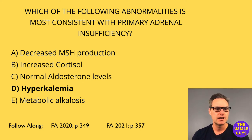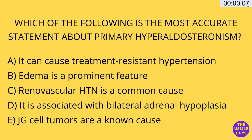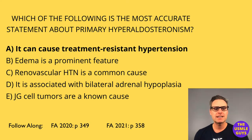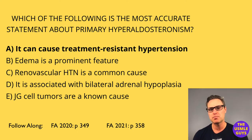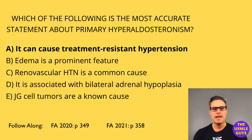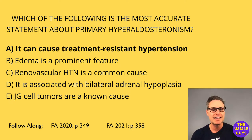All right, let's move on to our next question. The correct answer here is A. Let's talk about hyperaldosteronism, which occurs when the adrenals secrete too much aldosterone. Primary hyperaldosteronism results from either bilateral adrenal hyperplasia or an adrenal adenoma, and is characterized by increased aldosterone and decreased renin. One key to identifying this on exam day is recognizing that despite treatment for hypertension, it doesn't get any better.